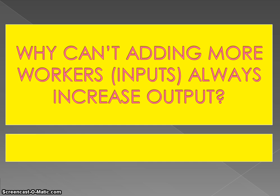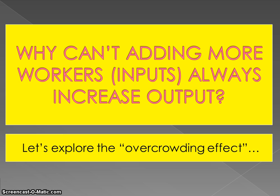To get you thinking about this topic, consider this question: why can't adding more workers always increase output? Some people believe that if you just keep adding inputs to production, you should keep getting more output. The reason this doesn't work is that overcrowding sets in. We have some inputs in the short run that are fixed, and those fixed inputs can only work to a certain capacity, so adding additional variable inputs to a fixed amount isn't always helpful after a certain point.